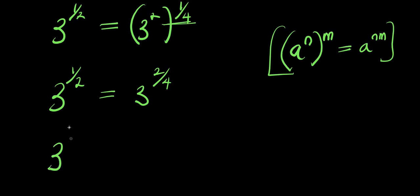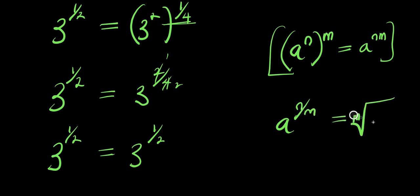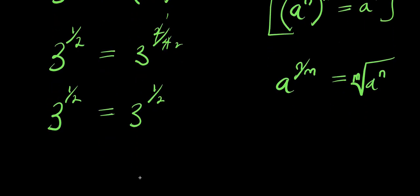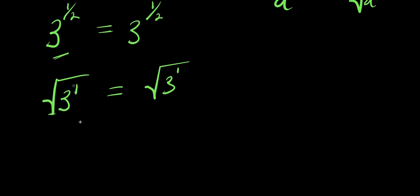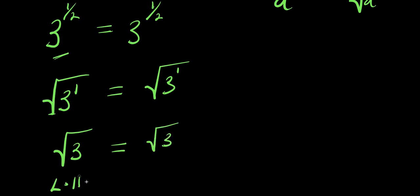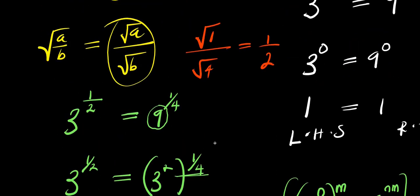Simplifying further: 3 to the power of 1 over 2 on the right, the exponents 2 and 1 over 4 multiply to give 2 over 4, which simplifies to 1 over 2. Using the identity that a to the power of n over m equals the m-th root of a to the power of n, we get square root of 3 to the power of 1 on both sides. Since 3 to the power of 1 is 3, we have square root of 3 equals square root of 3. The left hand side equals the right hand side, confirming t equals 1 over 4 is correct. Both solutions have been verified.